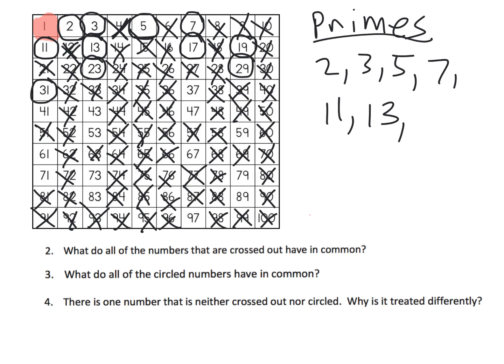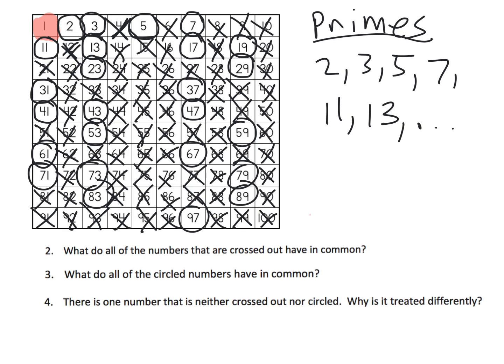What we have left over are all the prime numbers — these are the remaining numbers that are prime. For example, we circle 23 and then count 23, which gets us to 46, then to 69, then to 92, and we cross them off if they're not already crossed off. So everything that's been circled is a prime number.